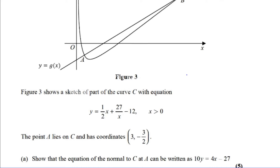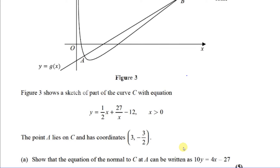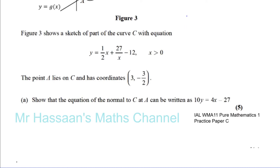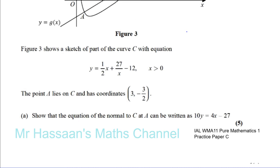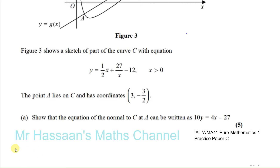To find the equation of the normal — which is a straight line — we need two things: the gradient and a point on the line. We already have the point, which is A, so we know its coordinates. What we still need is the gradient of the normal.